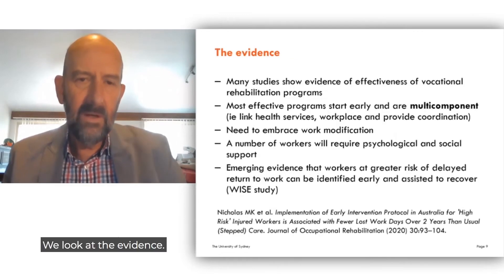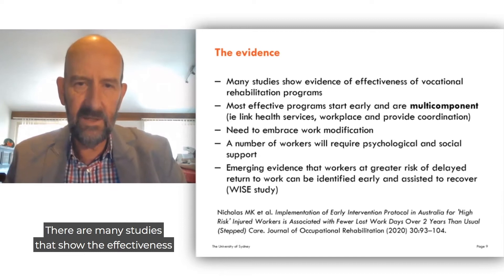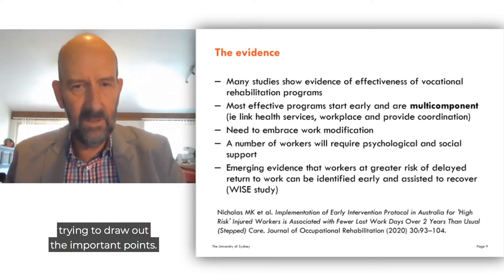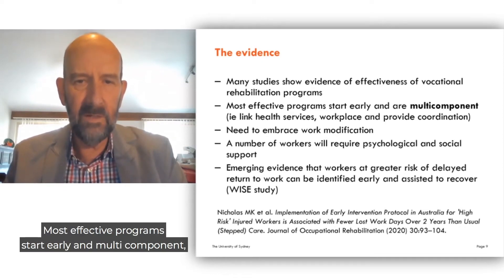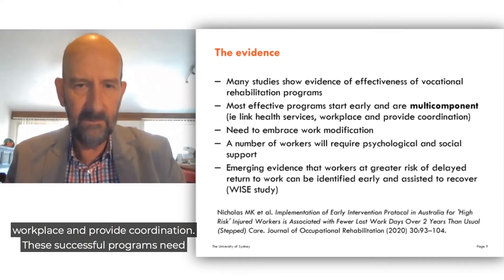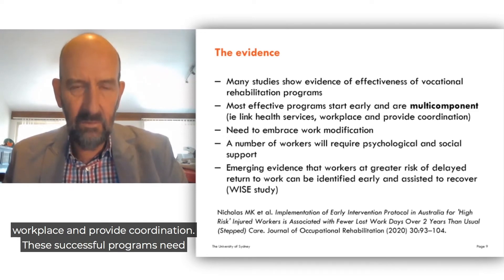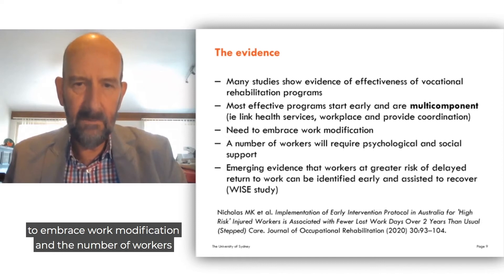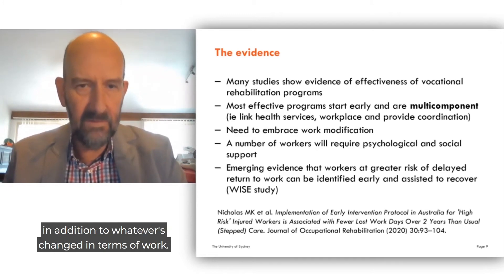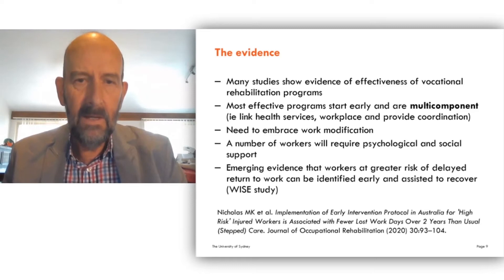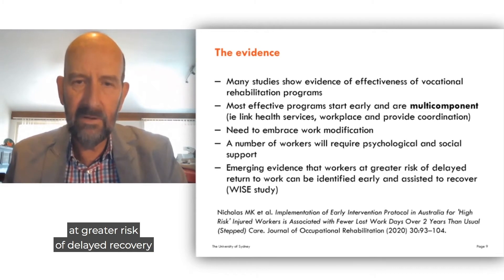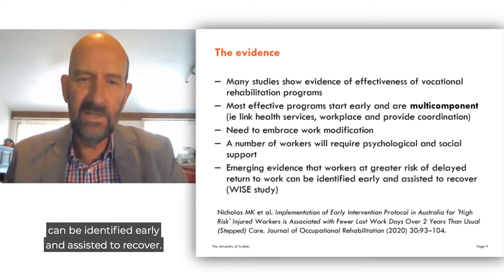These are complicated issues. If we look at the evidence, there are many studies showing the effectiveness of vocational rehabilitation programs. Most effective programs start early and are multi-component, meaning they link health services, workplace, and provide coordination. These successful programs need to embrace work modification, and a number of workers will require psychological and social support in addition to whatever's changed in terms of work. There's emerging evidence that workers at greater risk of delayed recovery can be identified early and assisted to recover.